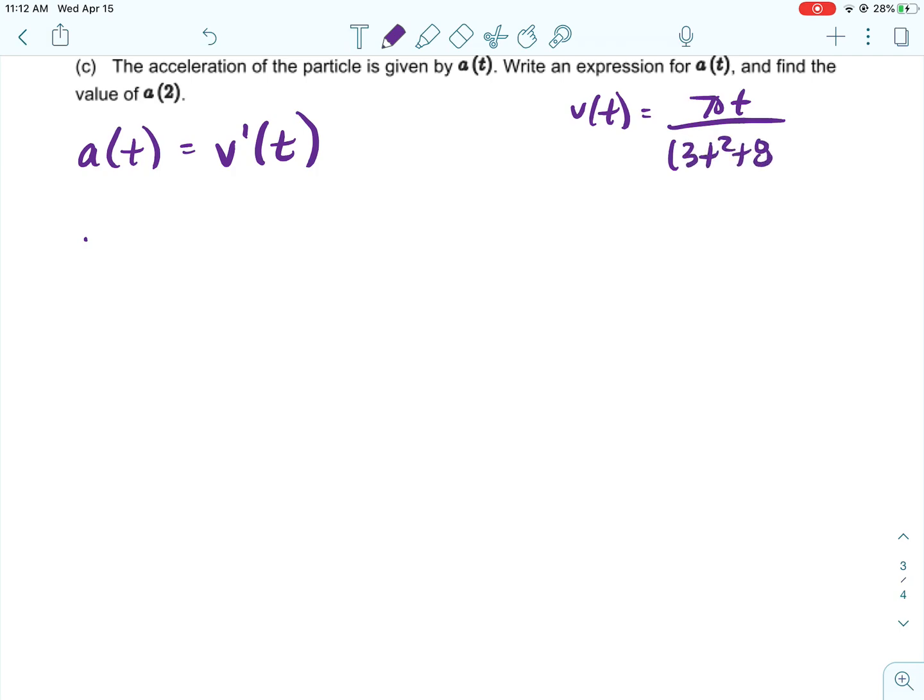So a of t is equal to the derivative of v of t. And we know what v of t is because we found it, we verified it, and it was given to us in part a. So I'm just going to jot it down because it's hard for me to talk about it when I can't see it.